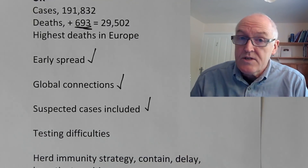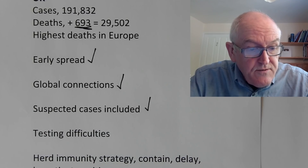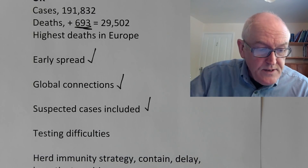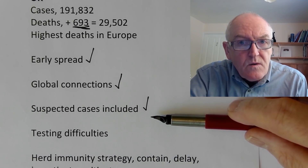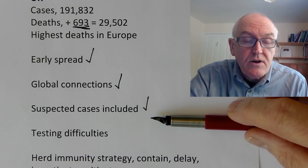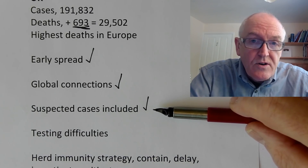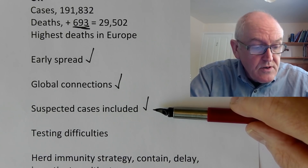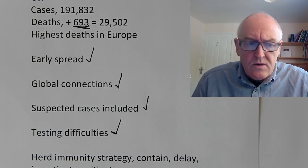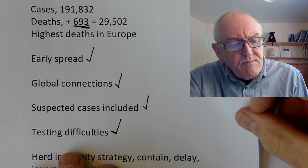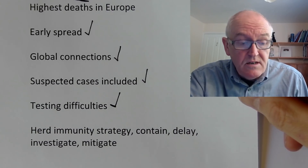The UK data does include suspected cases. The latest data from the Office for National Statistics is up to the 24th of April, and that includes suspected cases. The way this works is: if COVID-19 or coronavirus is mentioned on the death certificate, that's counted as a case — where the certifying doctor thinks coronavirus was part of the cause. The testing difficulties we've had in the UK have been well known. For example, the UK government ordered 3.5 million antibody tests from China very early on, but the tests didn't work and had to be sent back.